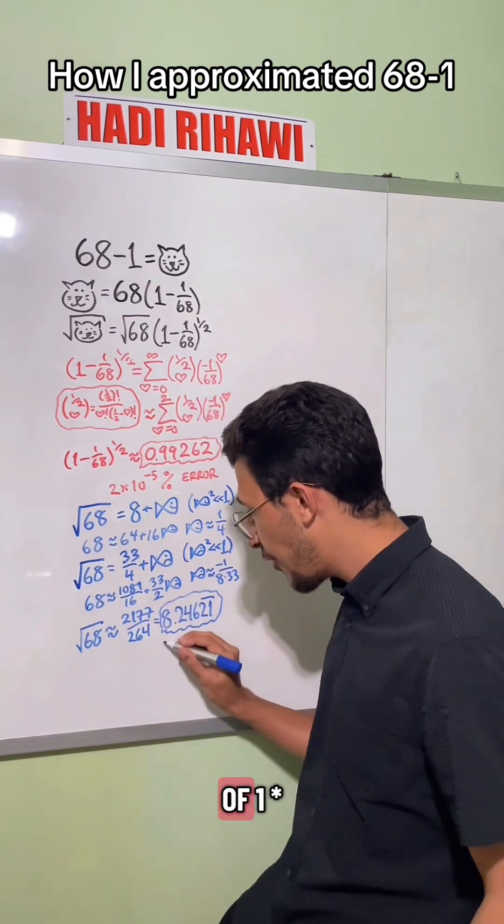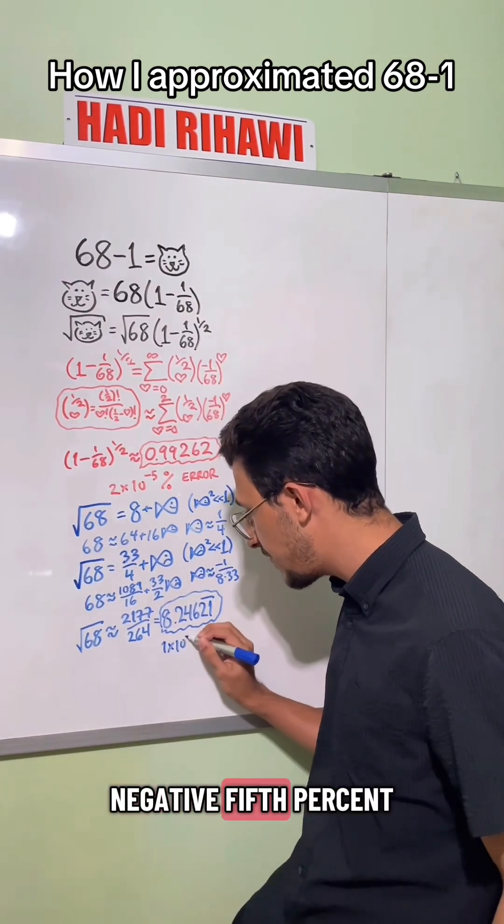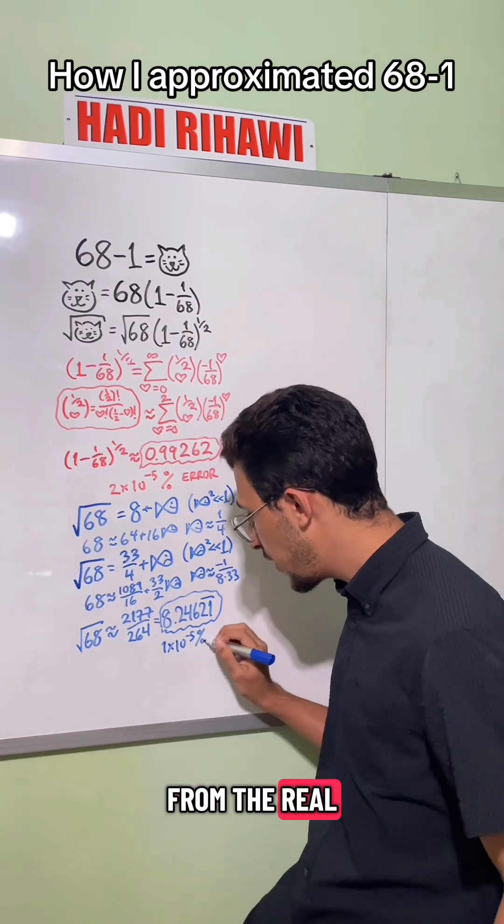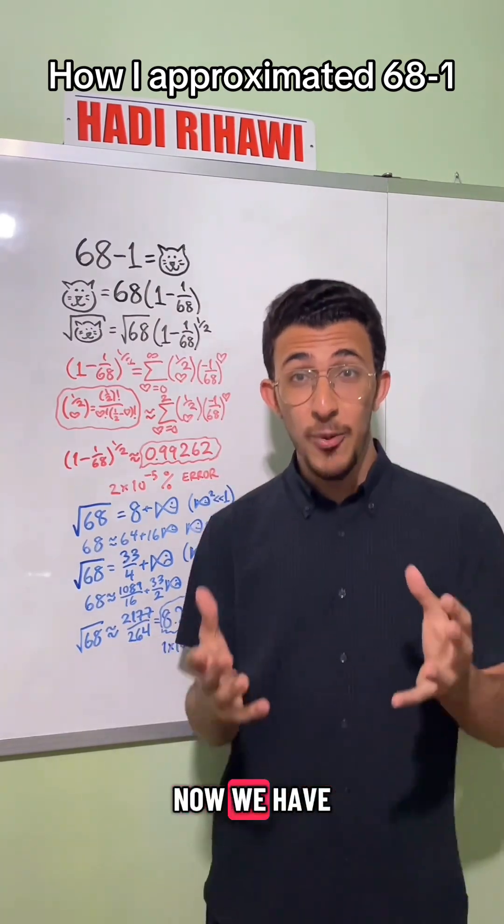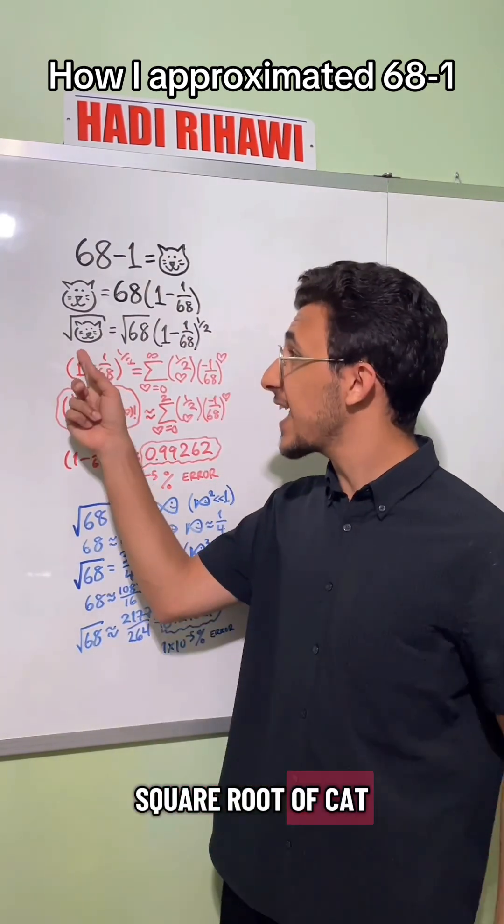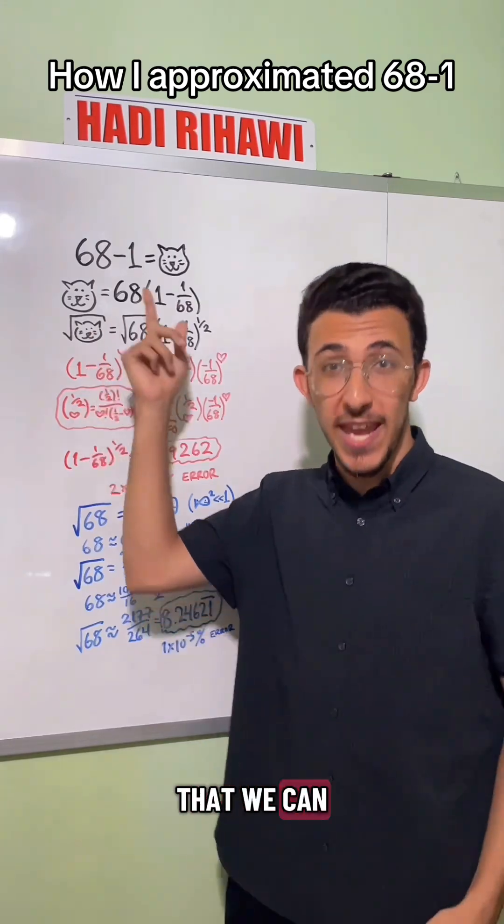This value has about an error of 1 times 10 to the negative 5th percent from the real value of the square root of 68. Now we have all the pieces that we need to calculate the square root of cat, and then from that, we can calculate cat itself.